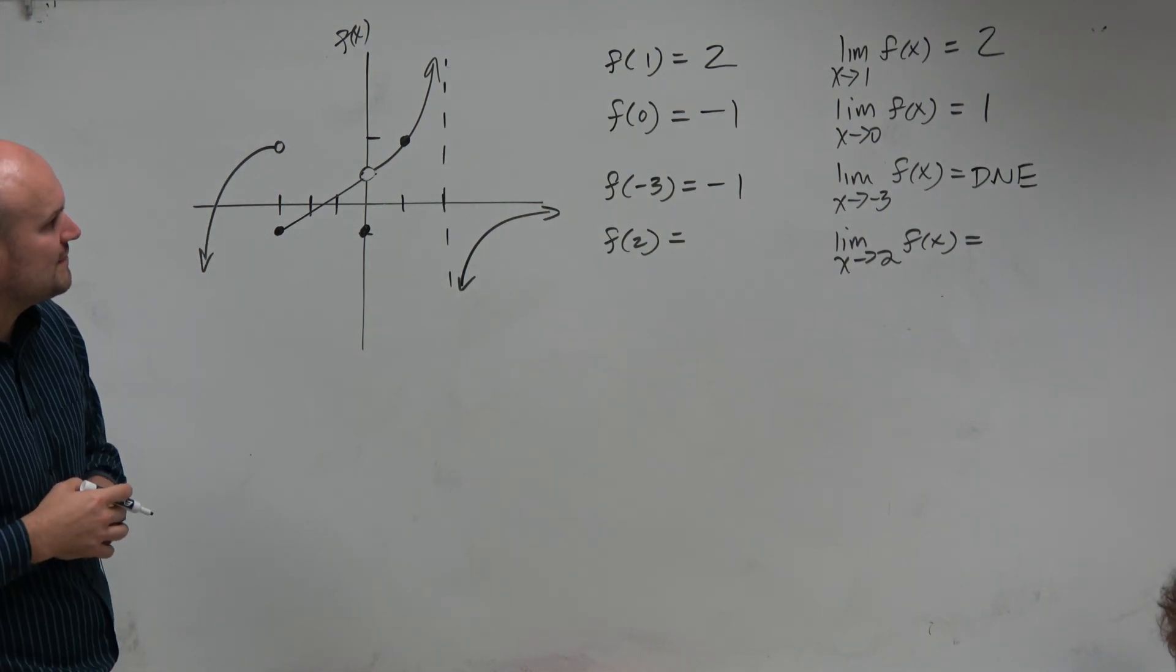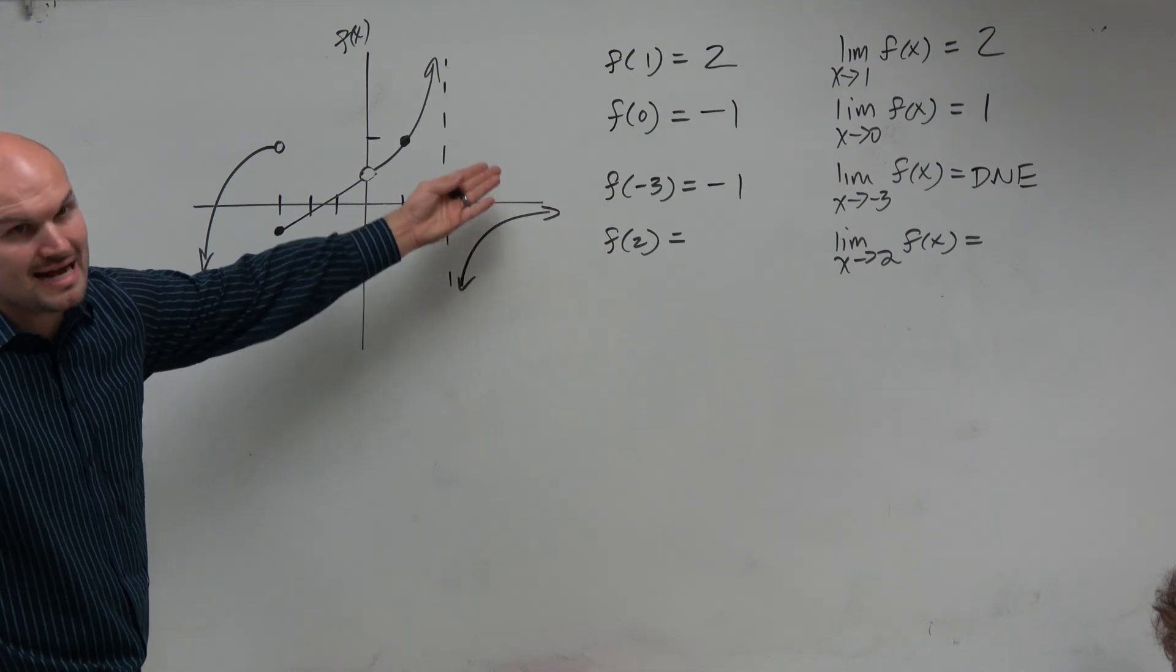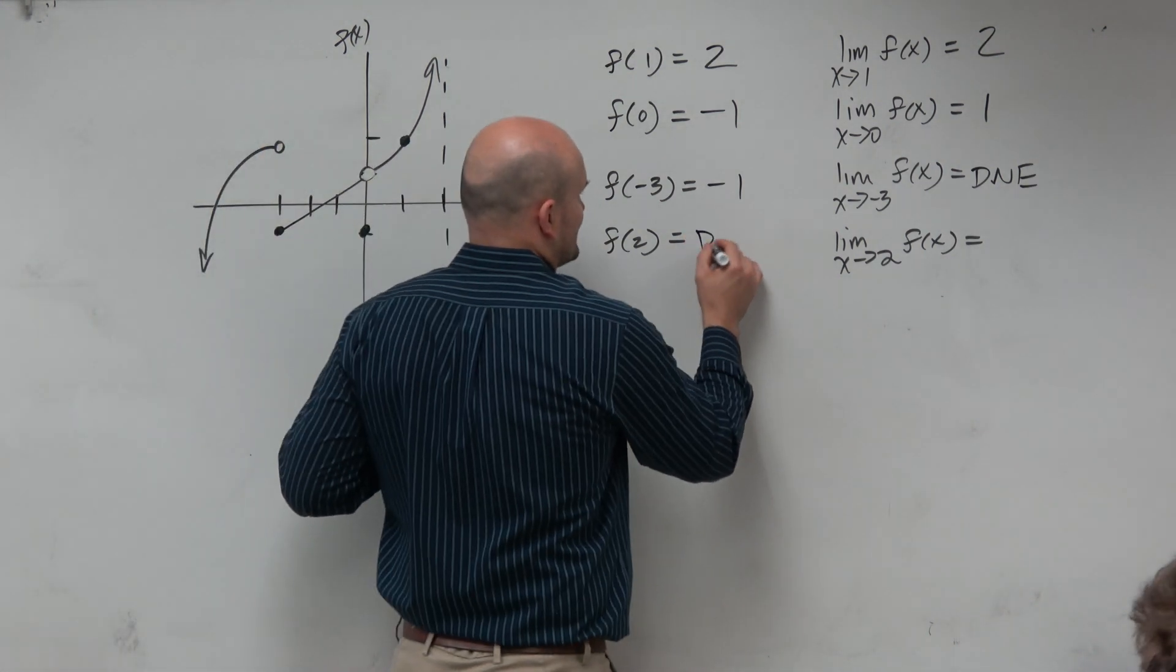And then the last one, guys, we have f of 2. Well, we go to 2. That's obviously an asymptote, right? Asymptotes are undefined values. So that does not exist.